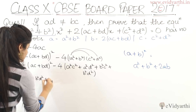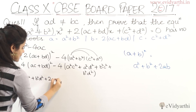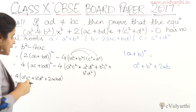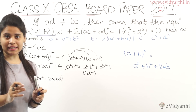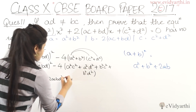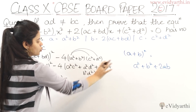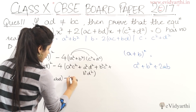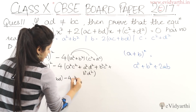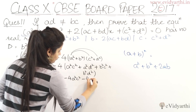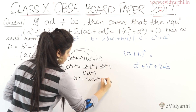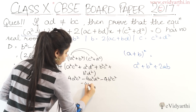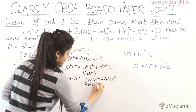Plus 2ab, where ab is acbd. We note there is a correction here. Then minus 4, and we distribute the negative outside so all the plus terms inside become negative. This gives: −4a²c² − 4a²d² − 4b²c² − 4b²d².